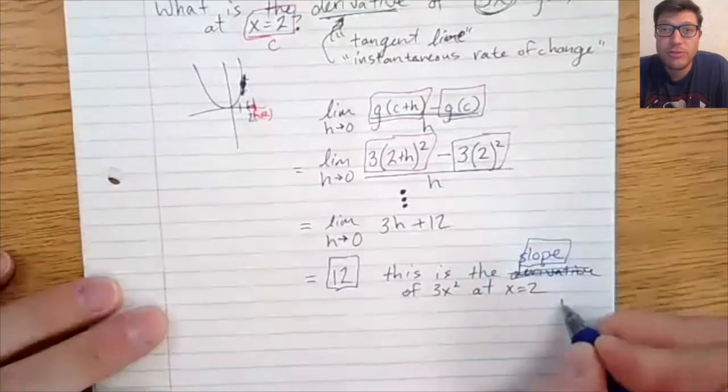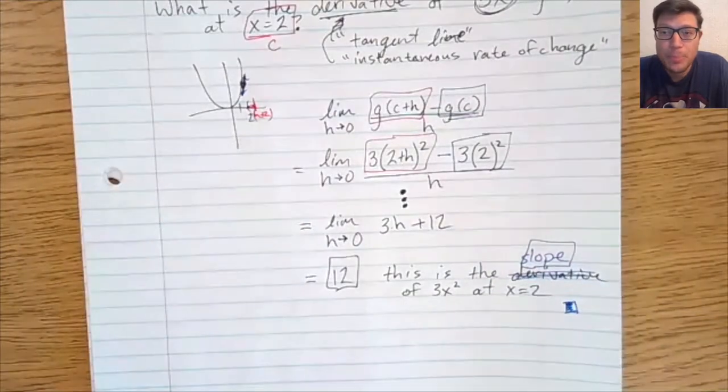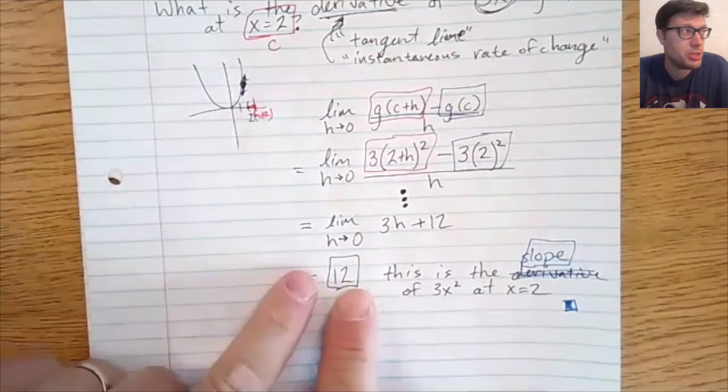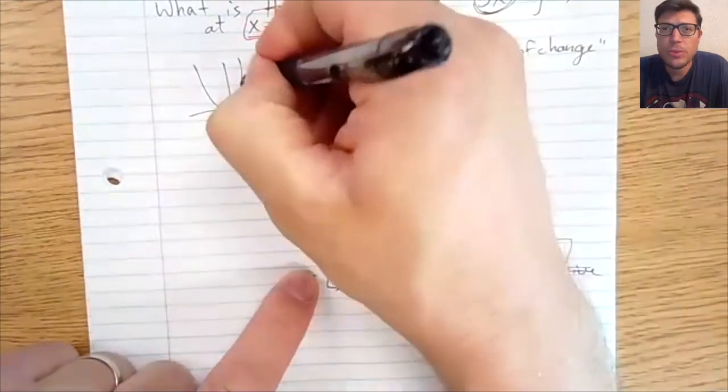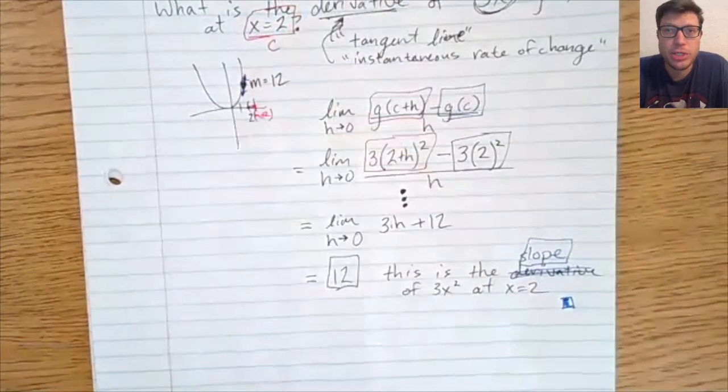This is the derivative. This is the slope. This is our exact answer for what is the derivative of a function, specifically at a location like x equals two.